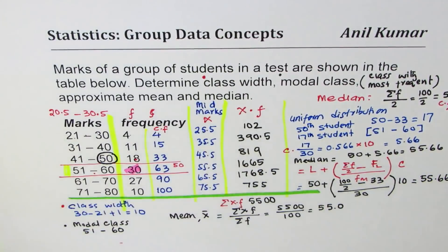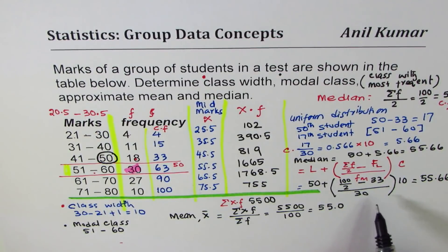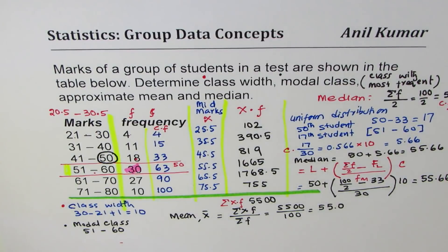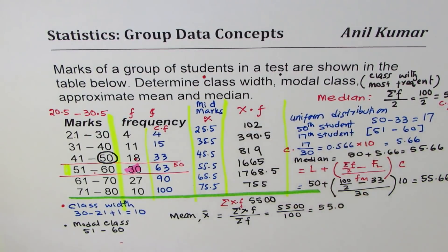So we get the same result using the formula and using the logic. But anyway this is always approximate. We are done based on the assumption that the data is uniformly distributed.